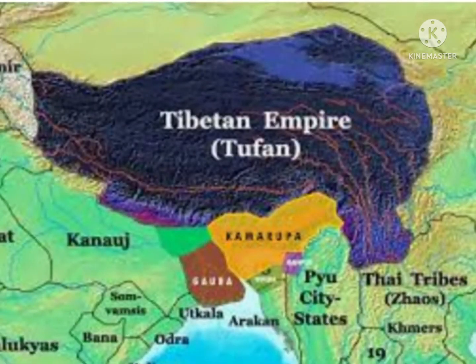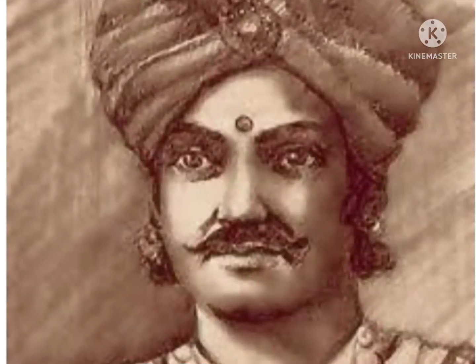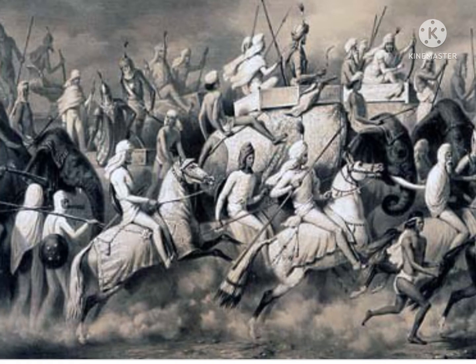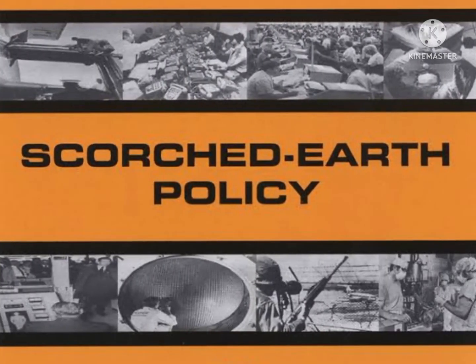In the year 1206, Bhaktiyar Khilji, with an army of 12,000 soldiers, passed through Assam to attack the Tibet region. During that time, the Assam region was under the control of King Prithu of the Kamrup dynasty. King Prithu intentionally let Bhaktiyar Khilji pass through his region without offering any disturbance. Later, when Bhaktiyar Khilji's army had passed through his region, Raja Prithu adopted a Scorched Earth policy, due to which 6,000 soldiers of Bhaktiyar Khilji were killed.